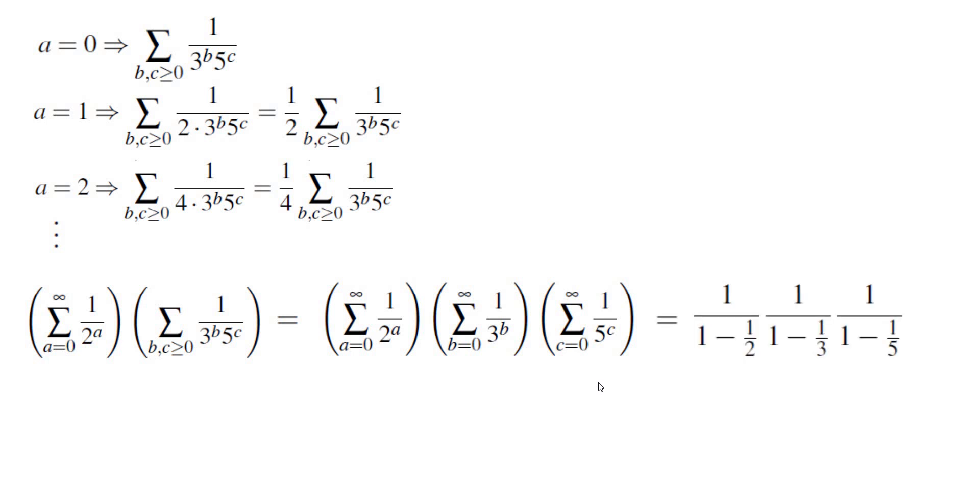We know the formula for a geometric sum. It is the first term over 1 minus common ratio. Notice that the common ratios are 1 half, 1 third and 1 fifth and all of them are between negative 1 and 1 which means we are able to use that formula. So the answer is 1 over 1 minus 1 half times 1 over 1 minus 1 third times 1 over 1 minus 1 fifth.